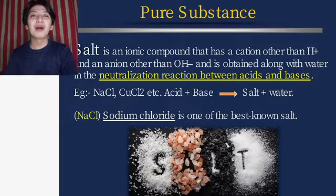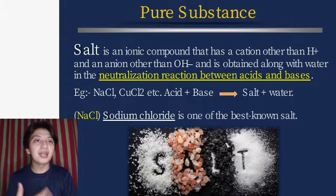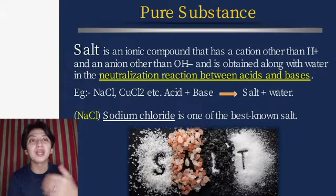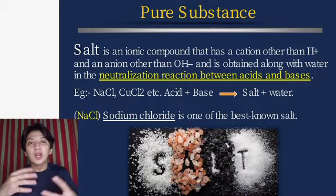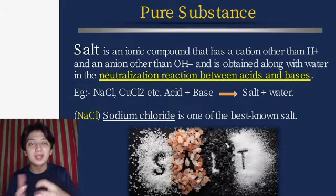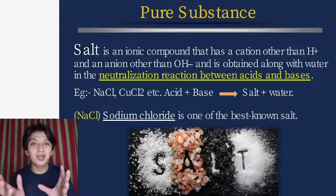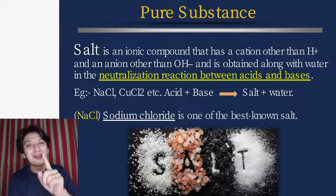Salt is an ionic compound that has a cation other than hydrogen ion and an anion other than hydroxide ion (OH⁻). It is obtained along with water in the neutralization reaction between acids and bases. One of the best-known salts in the world is sodium chloride — table salt — which you likely have at home.